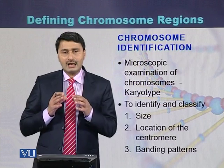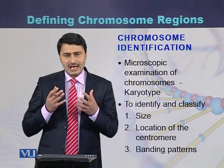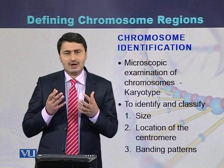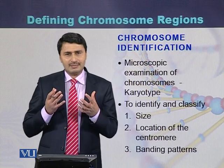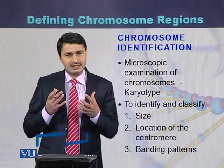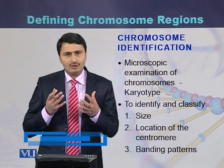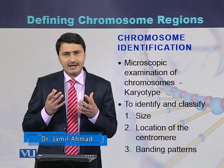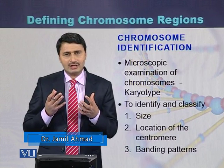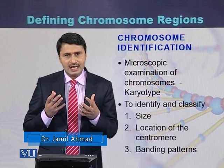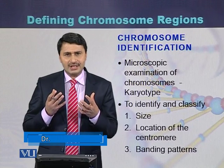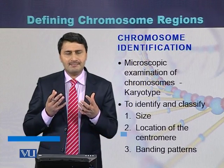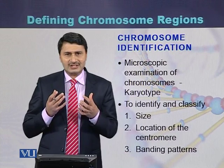Chromosome identification can be done based on three different things: their size, the position of the centromere, and the banding pattern present on the chromosomes.